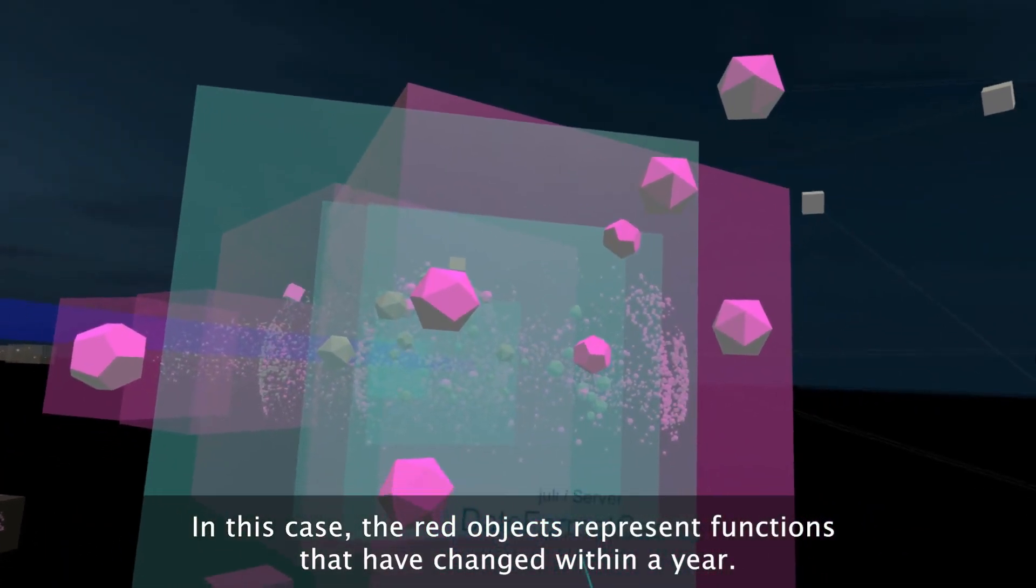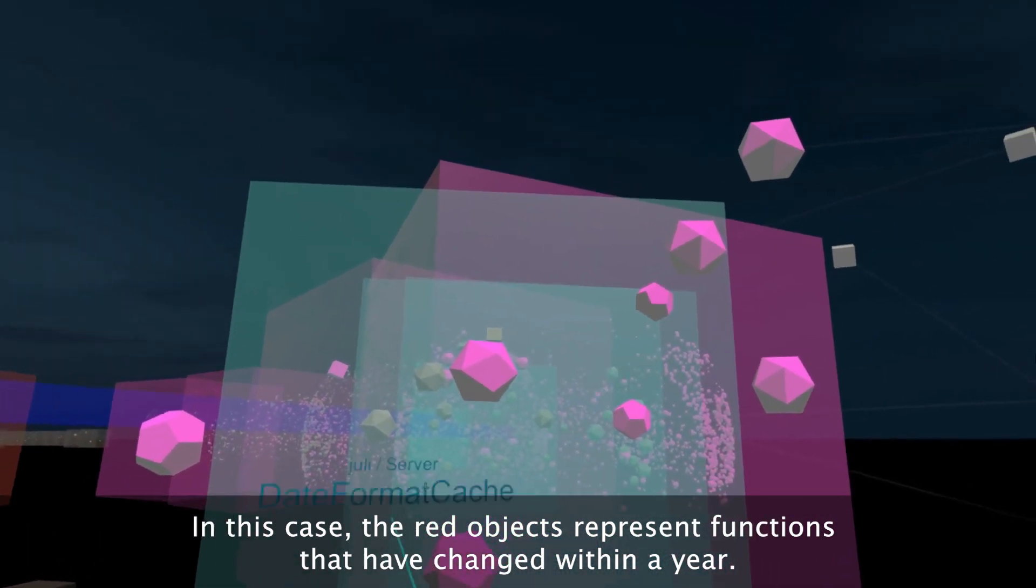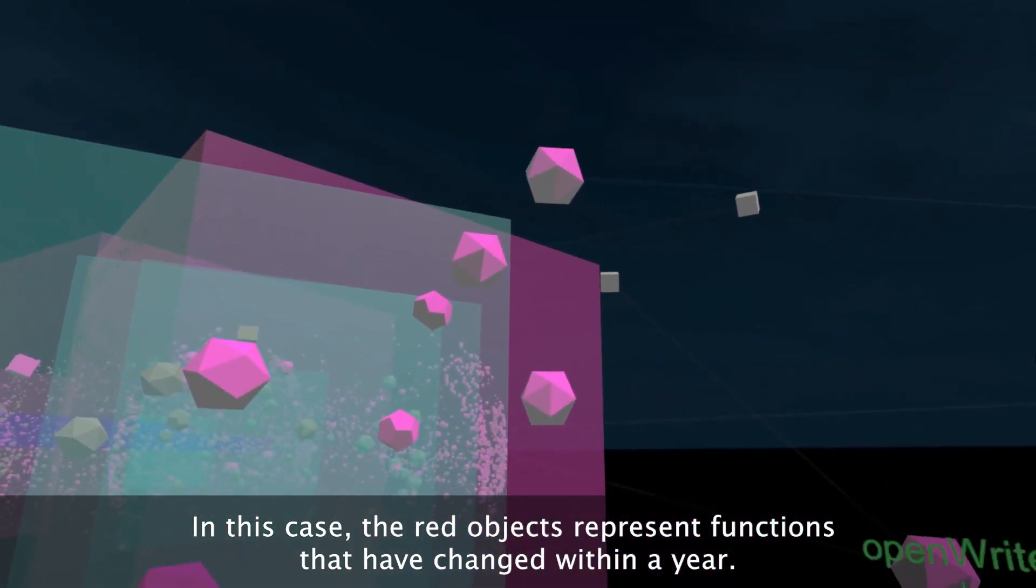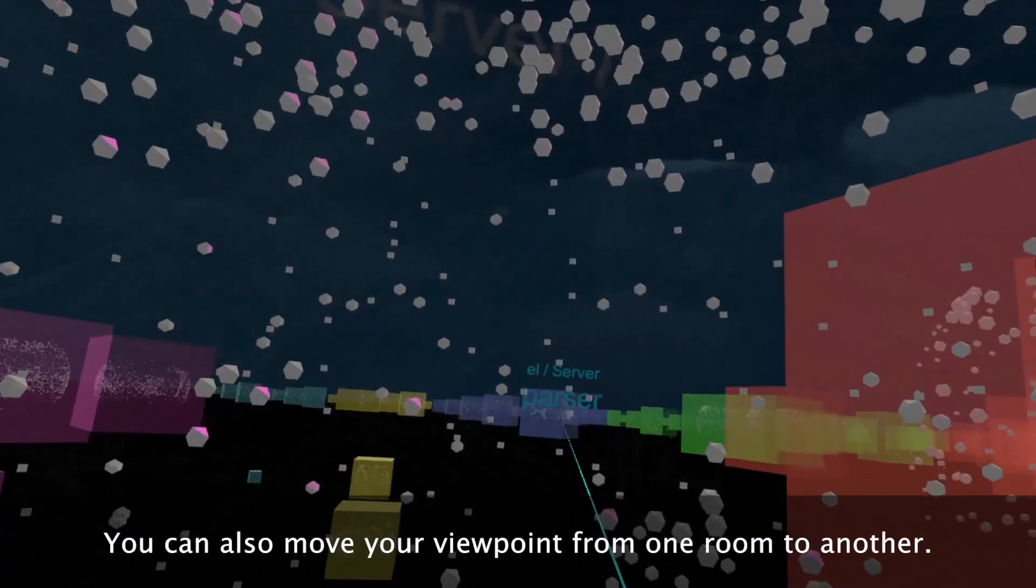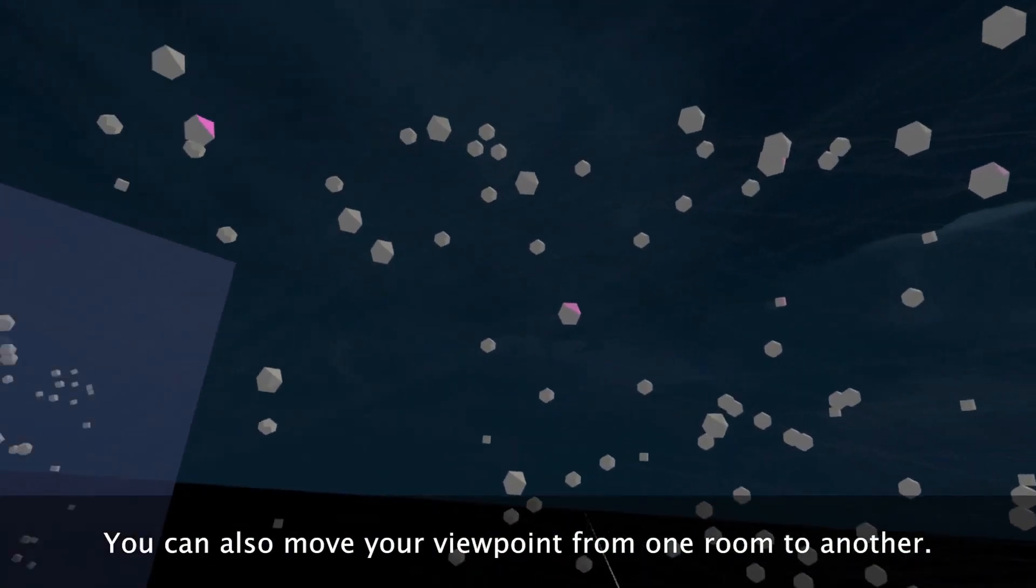In this case, the red objects represent functions that have changed within a year. You can also move your viewpoint from one room to another.